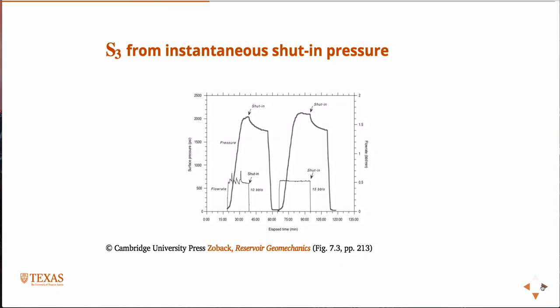The plot just shown was a cartoonish plot, but this is real data — just to show that real data tends to agree with those cartoonish plots. In the first cycle you don't see quite as obvious a formation breakdown pressure, and there are oscillations in the flow rate. But in the second cycle, you have a fairly constant flow rate, and you can see a clearer peak for the formation breakdown pressure, then the shut-in, and then the decay. We're going to zoom in on the shut-in part of the curve in the next figure.